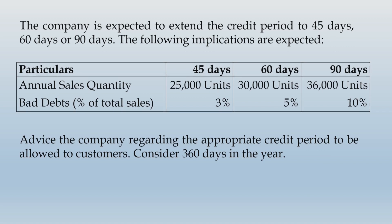Generally when we calculate the average amount of funds blocked, we observe it is given in terms of number of months. But here we find that credit period is given in number of days. In absence of any specific information, anyone would take 365 days in the year, but because the question specifically asks you to consider 360 days in the year, you should simply do that.